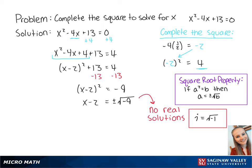So we rewrite this as x minus 2 equals plus or minus the square root of negative 1 times the square root of 9. This is equal to x minus 2 equals plus or minus 3i.